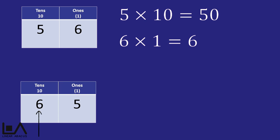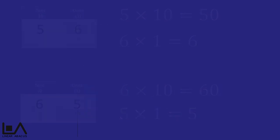Alternatively, we could have placed the 6 in the second position to make 60 or 6 tens and the 5 in the first position to make 5 or 5 ones.